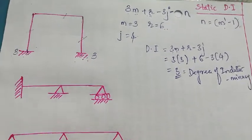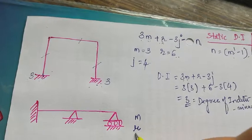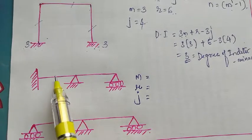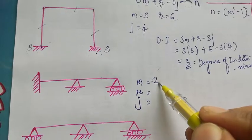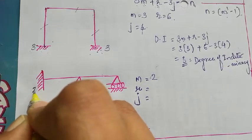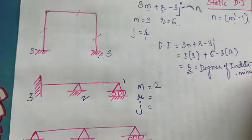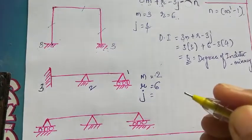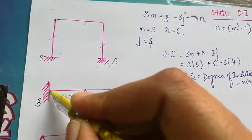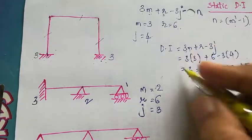Moving to the next problem — again a plane frame. Here m, r, and j: how many members? From here to here: member 1 and member 2, so m = 2. This is a fixed support having three reactions, a pin has two, and a roller has one, so total r = 6. Joints: 1, 2, and 3, so j = 3.